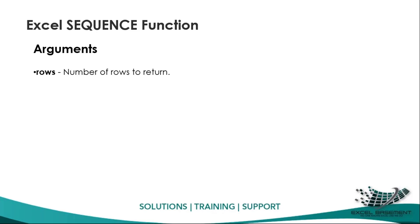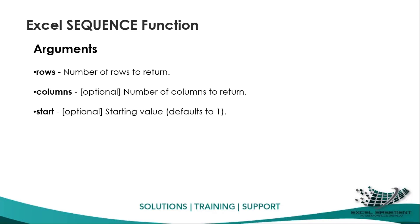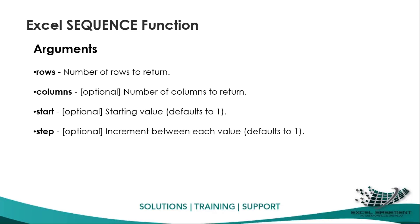The first argument is 'rows' — how many rows the sequence should generate. The second optional argument is 'columns' — how many columns to return; if not provided, it generates numbers in rows only. The 'start' argument defaults to 1 if skipped, or you can supply any custom number. The fourth argument is 'step'.